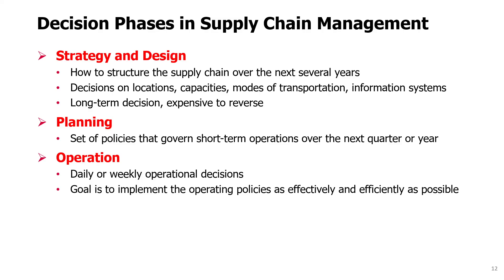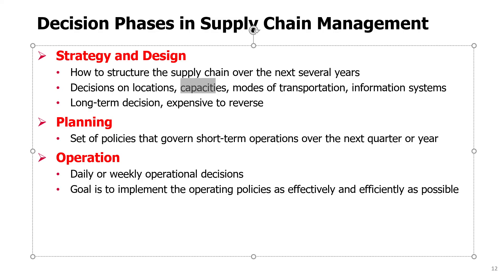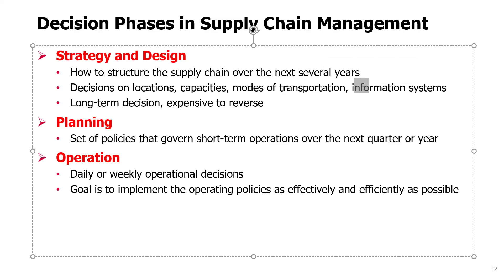Decisions involve choosing locations, capacities, modes of transportation, and maybe information systems that will be used internally and to communicate with other companies in the supply chain.